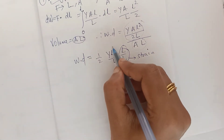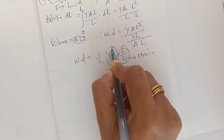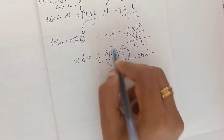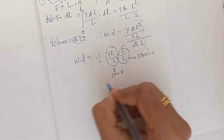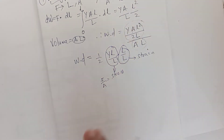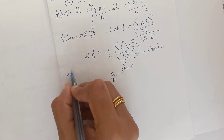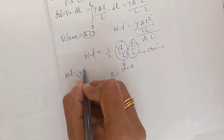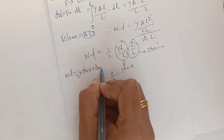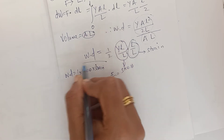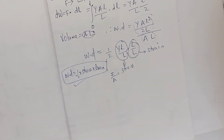Y·ΔL/L is actually force per unit area — this is stress. Therefore, work done per unit volume is equal to half times stress times strain. This is the work done in the case of longitudinal strain.